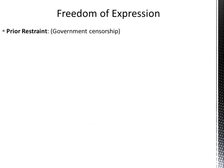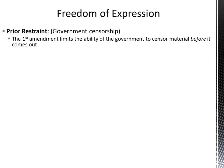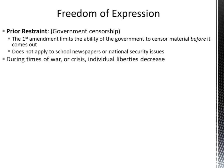Let's talk about freedom of expression. Prior restraint means government censorship, and the First Amendment limits the ability of the government to censor material before it comes out. The government has very limited ability to do that. However, this does not apply to school newspapers — schools can regulate those. It also does not apply to any issue that involves national security, and in a post-9/11 world, many more things have been discussed as national security issues.